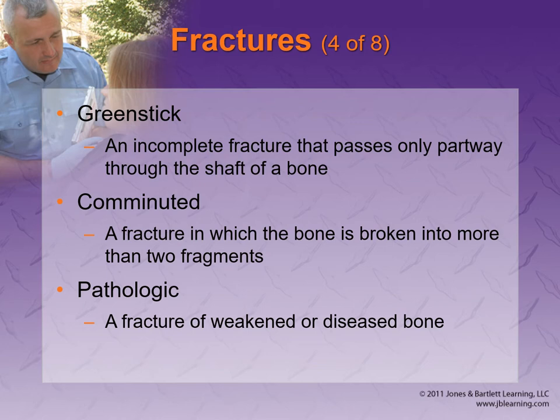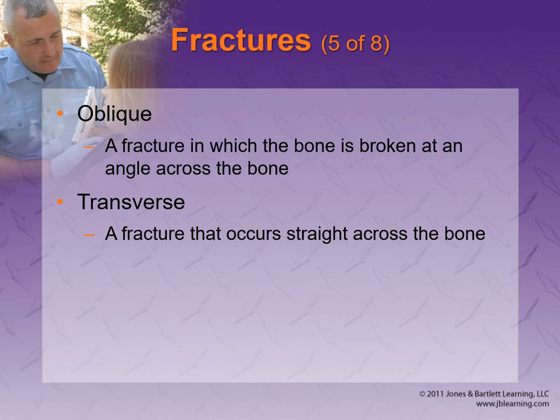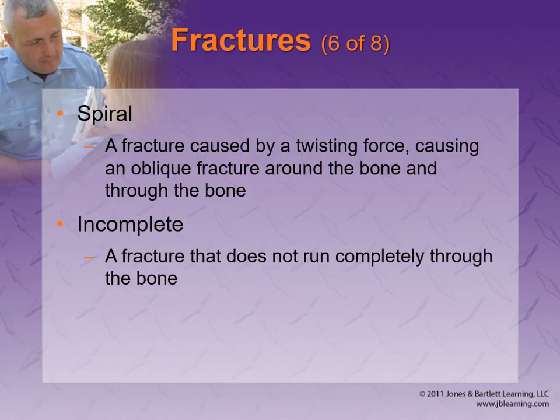Greenstick — think of celery. You can bend celery and it kind of starts to break but doesn't break all the way through. That's usually seen in younger people; it's kind of a partial break. Comminuted just means it's broken right in half. Pathologic is a fracture of a bone usually from osteoporosis or something like that, so if an older person breaks their hip it's usually considered a pathologic fracture. Oblique means there's a cross angle, transverse is right across the bone, spiral kind of twists down, and incomplete is similar to a greenstick.